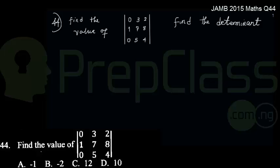We write out the terms given to us: 0, 3, 2, 1, 7, 8, 0, 5, 4. Before solving the question, we place signs on the matrix: plus, minus, plus. Then we create minor matrices from each of the elements.